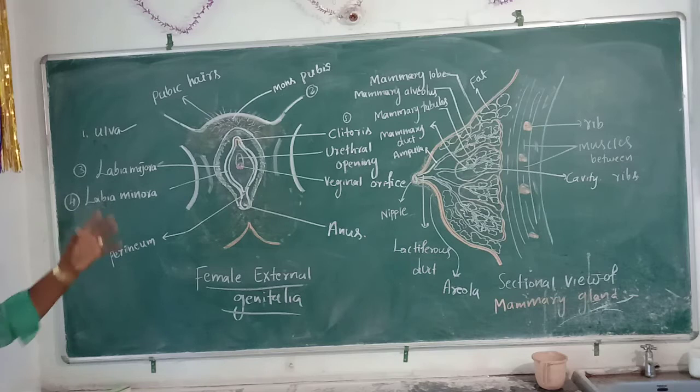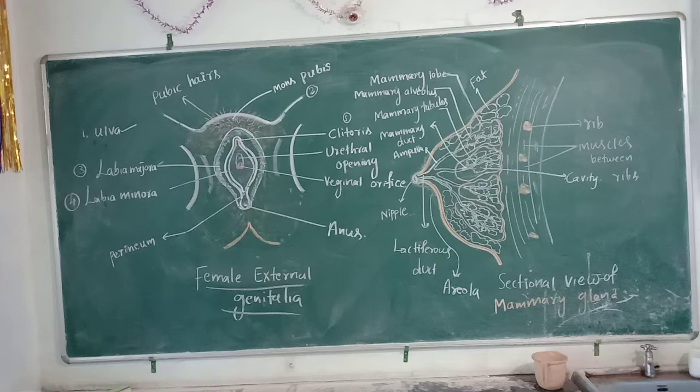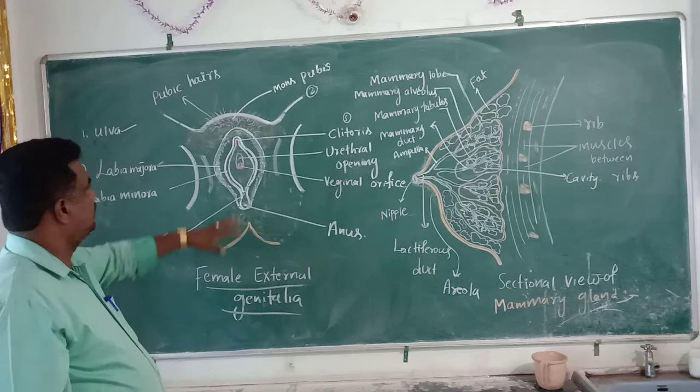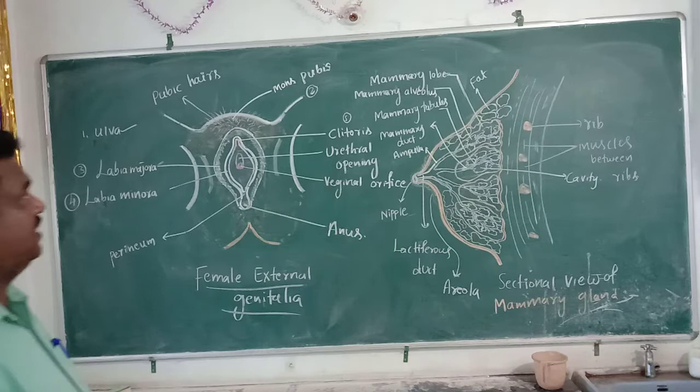The second one is mons pubis. Mons pubis is a fatty cushion-like tissue which is present above the vagina. And this mons pubis mainly consists of pubic hairs.